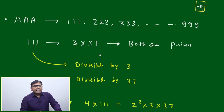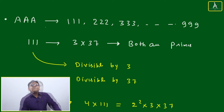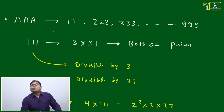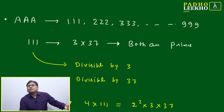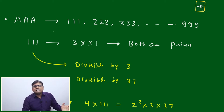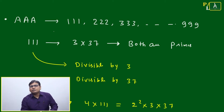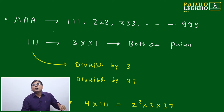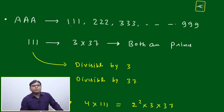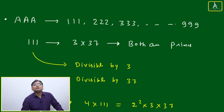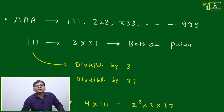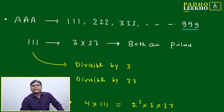For AAA, A can be equal to 1, 2, 3, 4, 5, 6, 7, 8, or 9 — any single digit number. So the numbers will be in the form of 111, 222, 333, and so on up to 999.